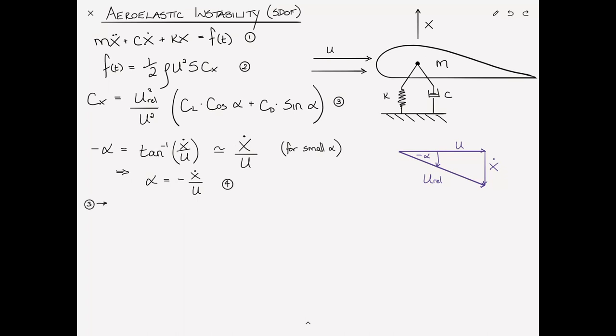Now, if we take equation 3 and we apply the small angle formula, if this angle is small, then u_relative and u are approximately equal. And so, Cx can be reduced to CL cosine α plus CD sine α. Again, this is for small α, u and u_relative are approximately equal. So, that becomes 1. Call that equation 5.